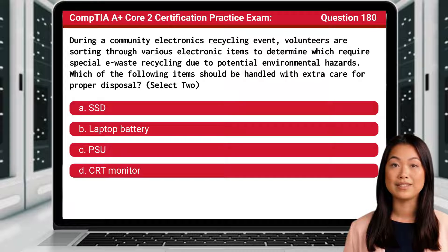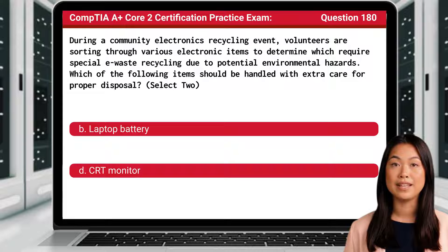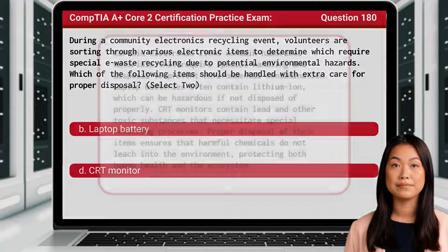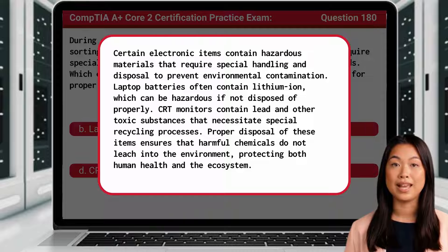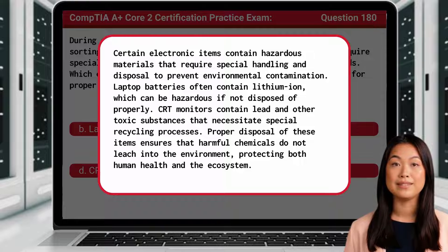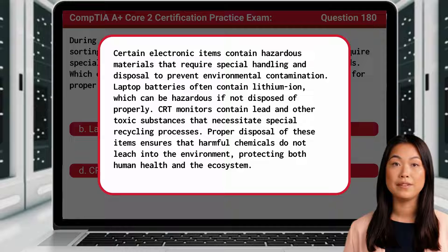The answer is B and D: laptop battery and CRT monitor. Certain electronic items contain hazardous materials that require special handling and disposal to prevent environmental contamination. Laptop batteries often contain lithium-ion, which can be hazardous if not disposed of properly. CRT monitors contain lead and other toxic substances that necessitate special recycling processes. Proper disposal of these items ensures that harmful chemicals do not leach into the environment, protecting both human health and the ecosystem.